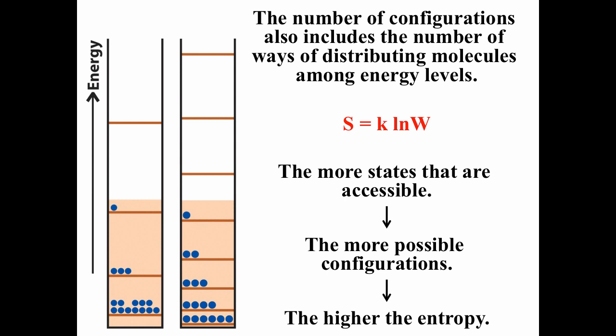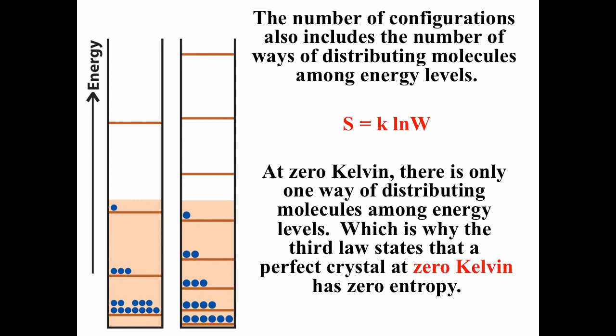When talking about filling energy levels, on the left we have two different systems. The far left has only three accessible energy levels; the one on the right has five accessible energy levels. The more accessible states there are, the more ways of packing those states, the more possible configurations, and the higher the entropy. Configurations can be due to positions, orientations, or ways of filling energy levels.